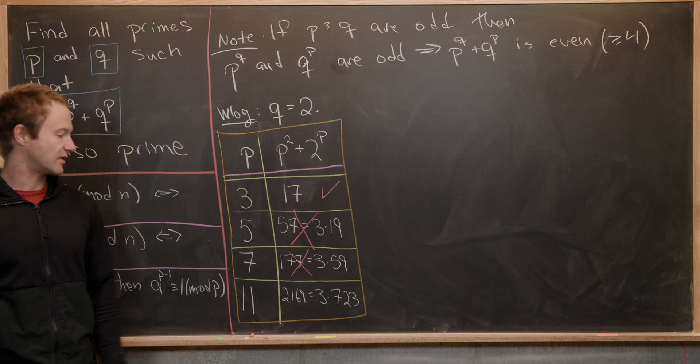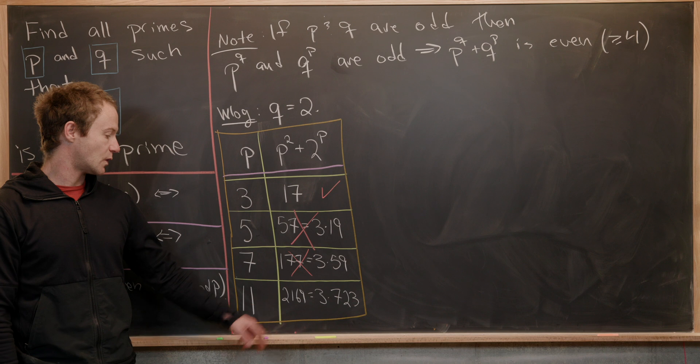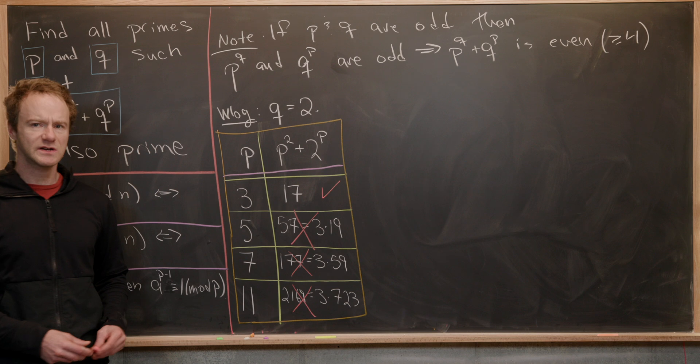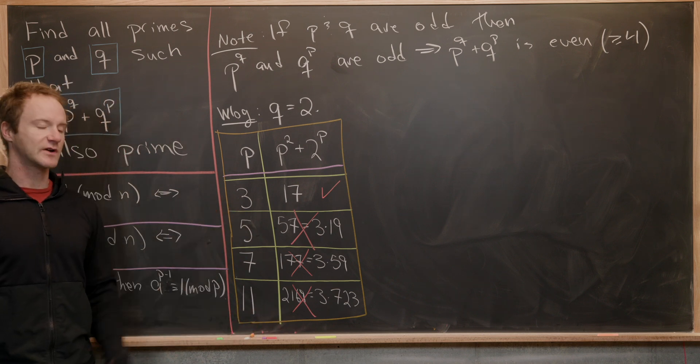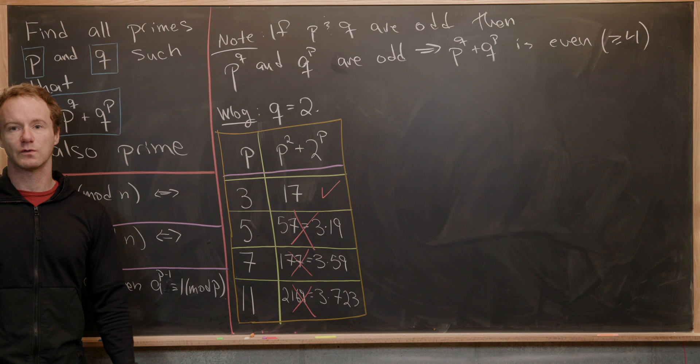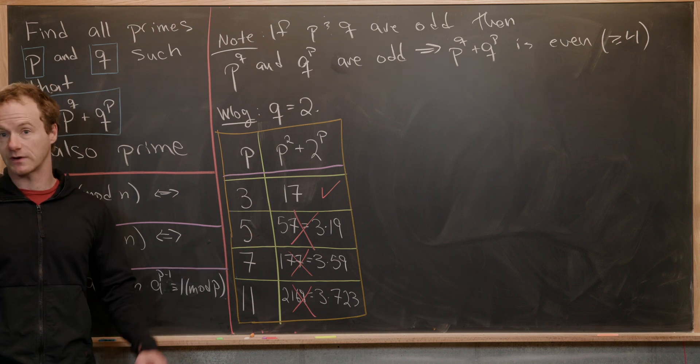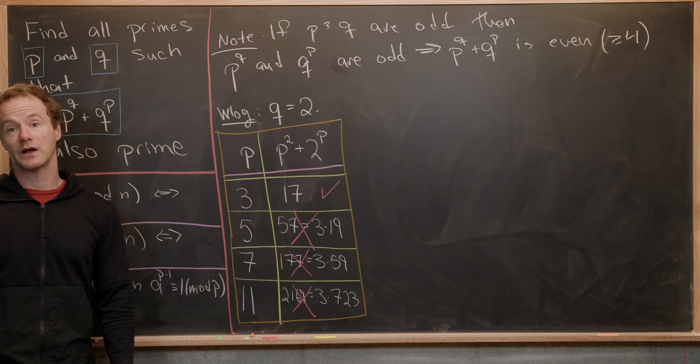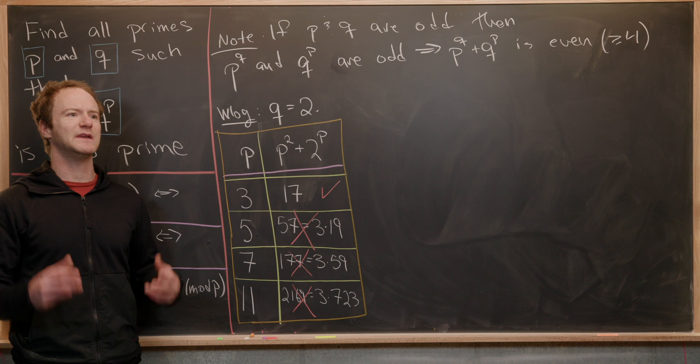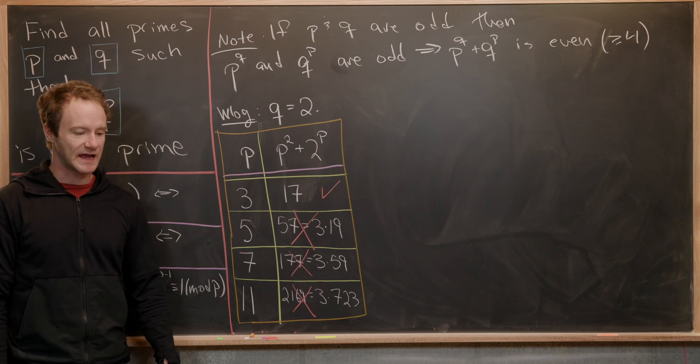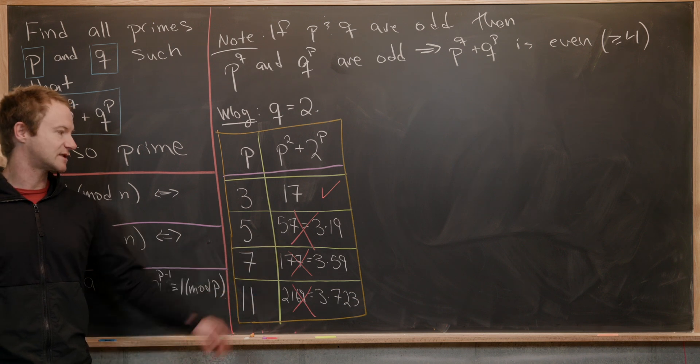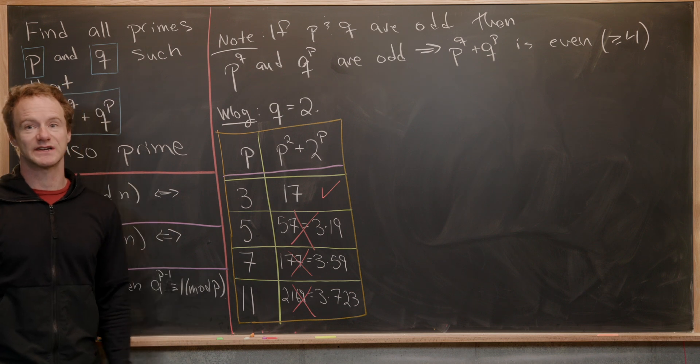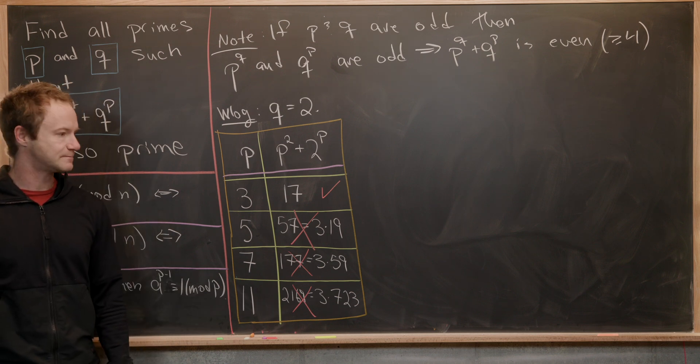Finally, when we plug in p equals 11, we get 2169, which is another multiple of three. So it looks like not only do we never get a prime after p equals three, but it looks like they're all multiples of three. And I would say if we just got composite numbers after plugging in p equals three, that would not be enough evidence without testing some more cases to show that that was the only solution. But since they're all multiples of three, that gives us a lot of evidence that maybe this kind of object is always a multiple of three.